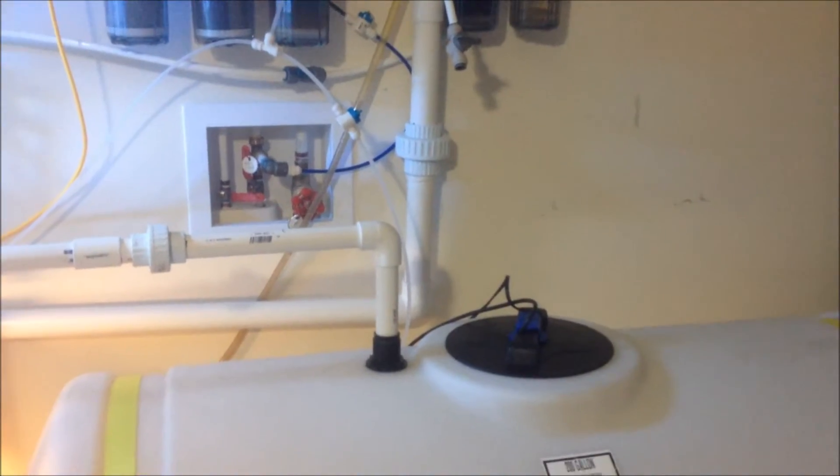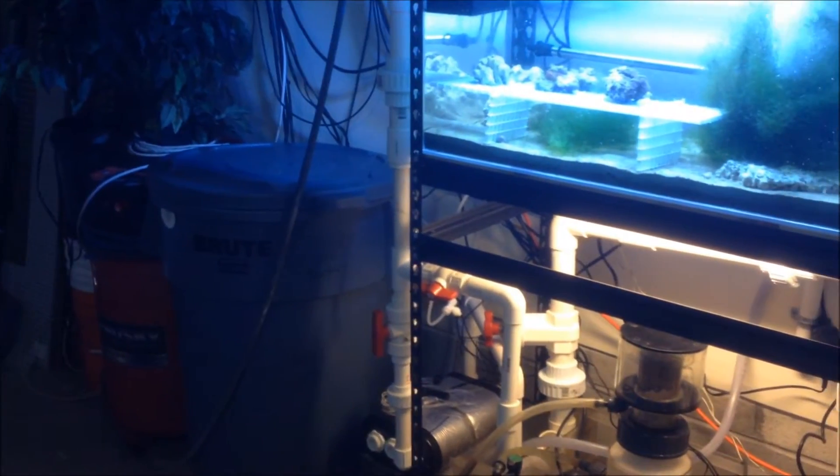I just add the RODI water from my RODI unit. One of the lines goes into here, the other one goes into the auto top off bin over there. Fill it up with about 200 gallons, just pour these bags of salt in there, pump mixes it up, real simple.